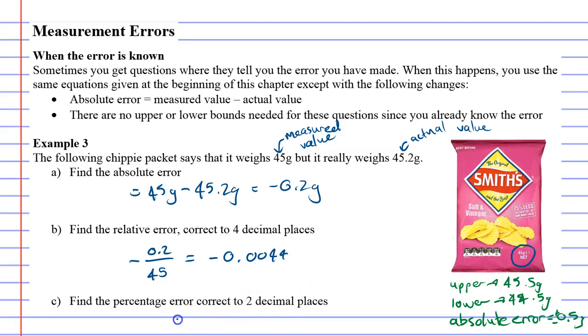And the percentage would be the same thing, negative 0.2 over 45, except they times it by 100. And to two decimal places, this would be negative 0.44%.